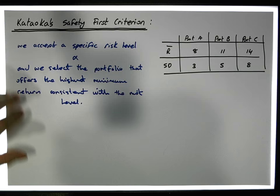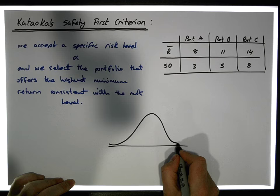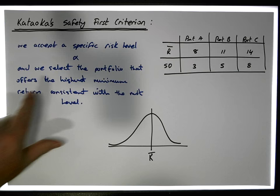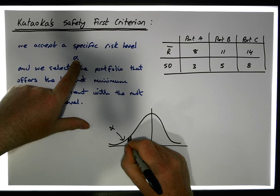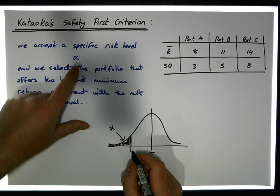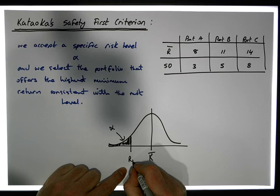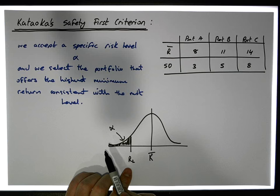To understand this, consider that a portfolio has an expected return R-bar. We choose some risk level alpha, which tells us how much area we put in the tail of the distribution. Based on that alpha, we calculate a lower return value — the minimum return level — that we don't want to fall below.